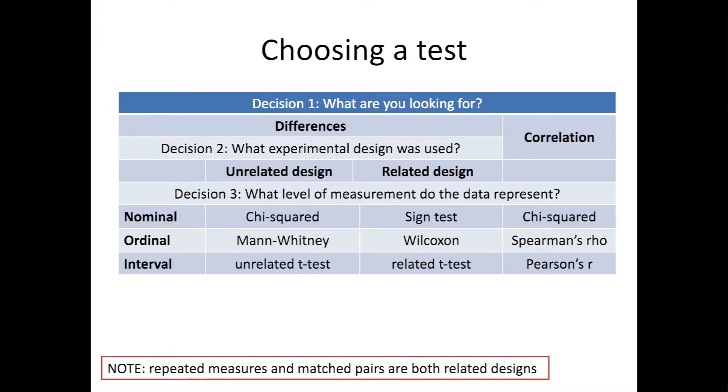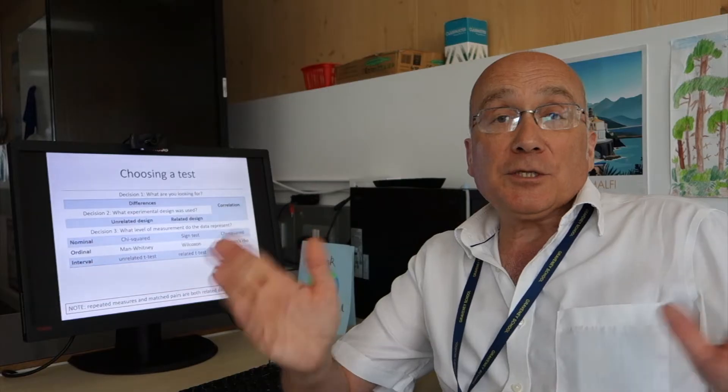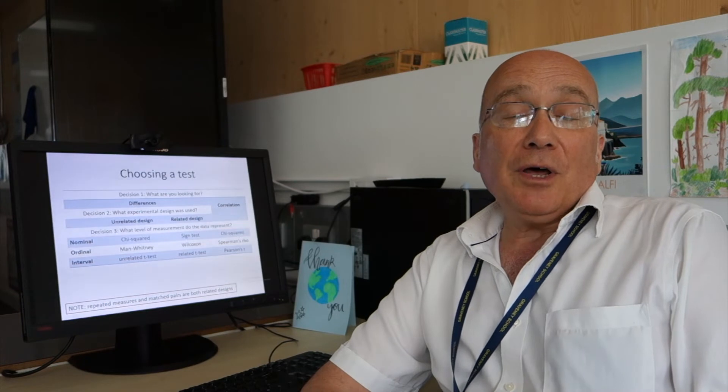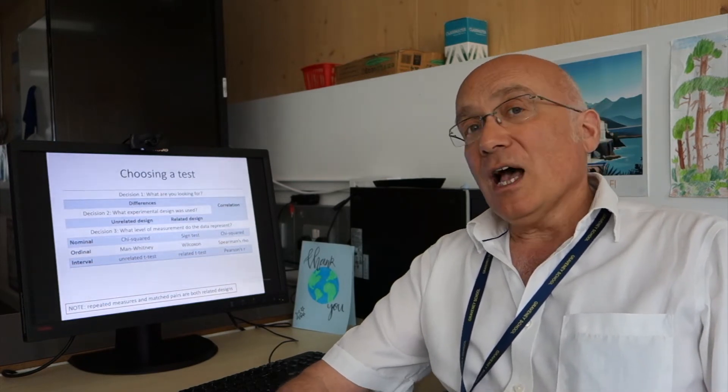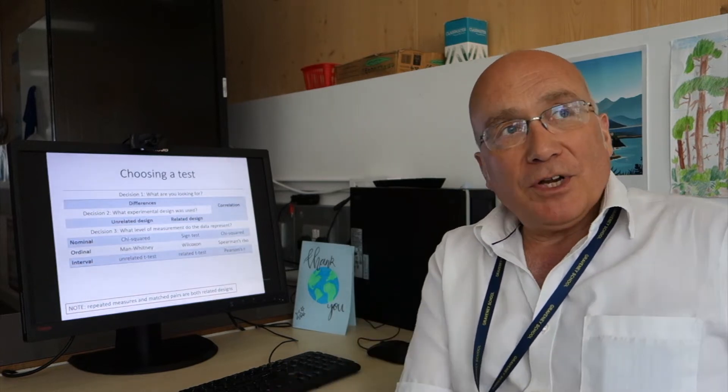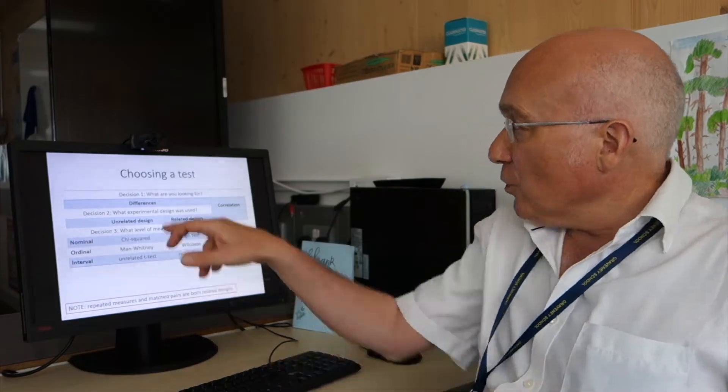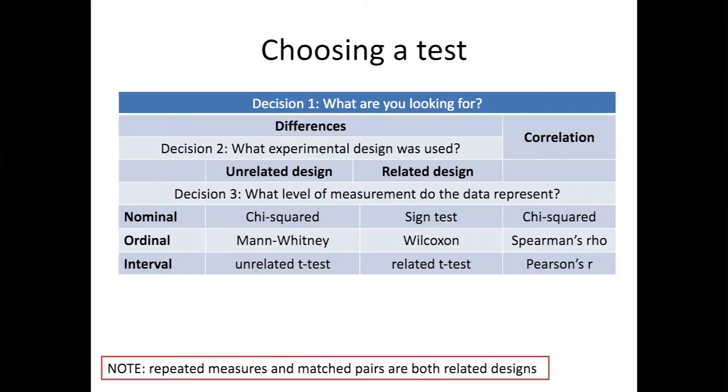So let's have a think about the statistical test that we would use on the experiment in video number 20 about whether psychology students or sociology students have the better record of punctuality. Let's have a think about which statistical test we would use. Well, first of all, it's a test of difference, isn't it? Decision one is easy. We're looking to see if psychology students are different from sociology students or not.